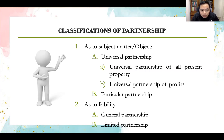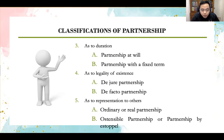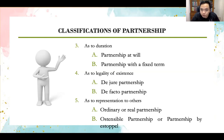As to liability, a partnership can be general or limited. As to duration, a partnership can be a partnership at will or a partnership with a fixed term. You refer to the articles of partnership to determine if there is a fixed term; if there is none, the partnership is presumed to exist at will, meaning any partner can withdraw or dissolve the partnership at any time. As to legality of existence, you have de jure and de facto partnership. As to representation to others, ordinary or real partnership, ostensible partnership, or partnership by estoppel.